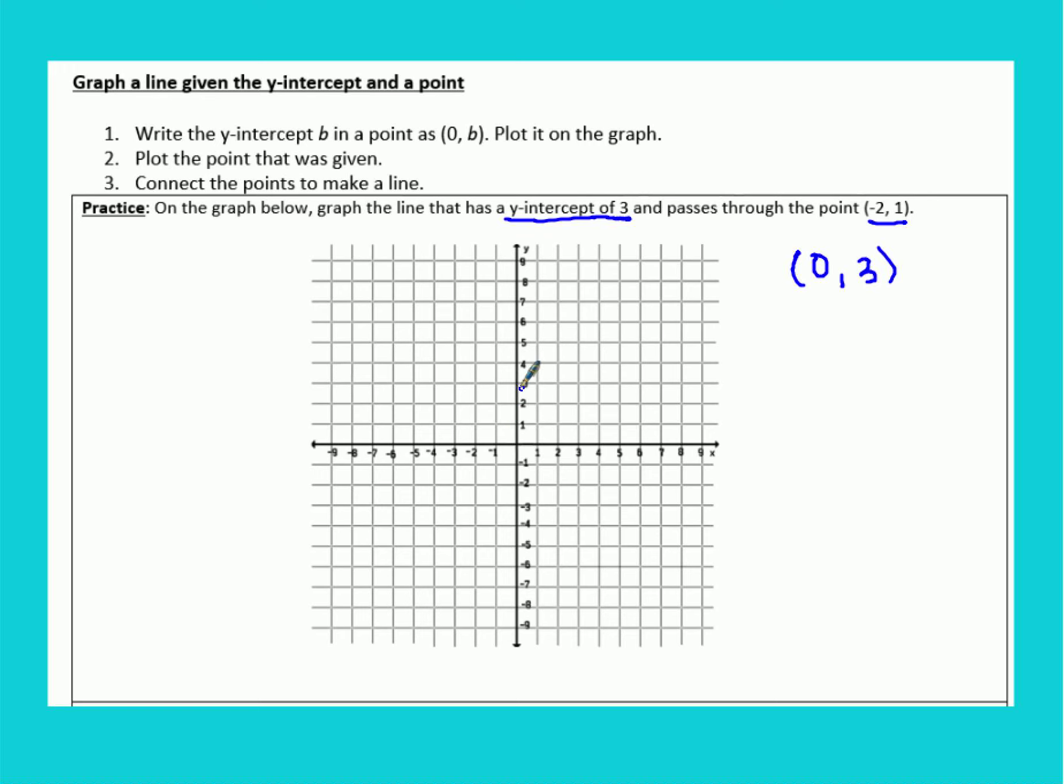So 0, 3 is right here. And negative 2, 1 is this point here. So that means that this graph is going to go up this way. And you can finish plotting those points there. So do your best to draw your line straight. And that's all we have to do. That's our graph right there.